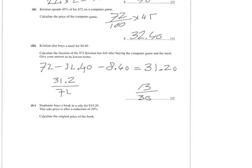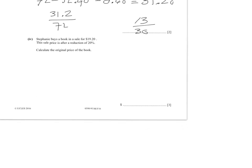Back to Stephanie — she buys a book in a sale for $19.20. This sale price is after a reduction of 20%. Calculate the original price of the book. For three points, this is a reverse percentage question. The $19.20 is 80% of the original price, because it's the sale price after a 20% discount. So divide by 80 to get 1%, then times by 100 to get the original price: 19.2 divided by 80 times 100 equals $24. Do not take 20% of $19.20 — that's the wrong approach. This is a reverse percentage: 80% of the total, divided by 80, times 100.